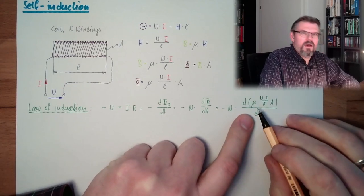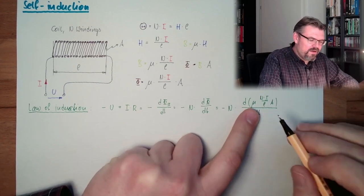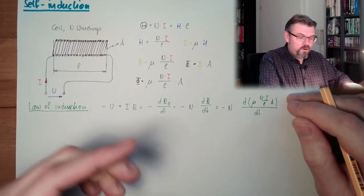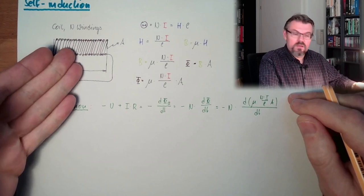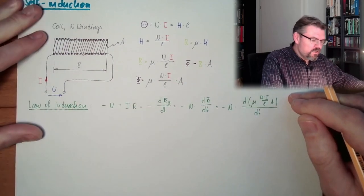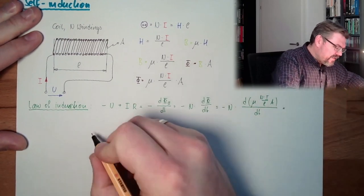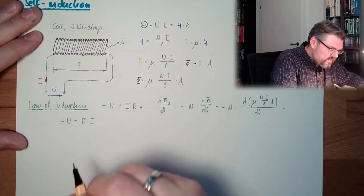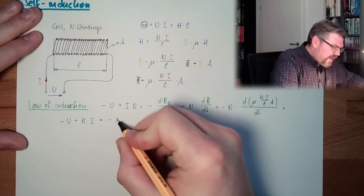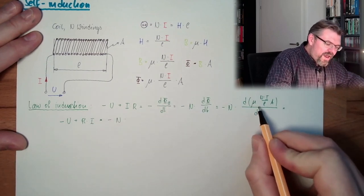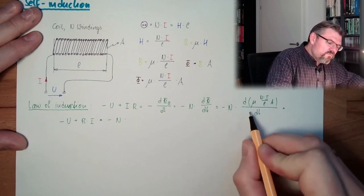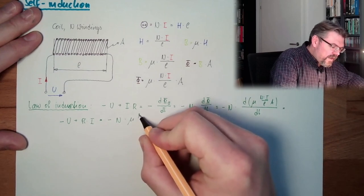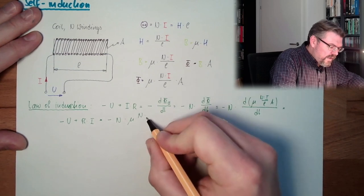And now, we set this in. So, now we say, this is minus N multiplied by the change rate of this, because this is φ, dT. And of course, what is changing in here? Let's see. μ? I don't think a constant is changing. N? No, still the same coil. L? No, it's still the same coil. A? No, it's still the same coil. I? Yes, I may change.